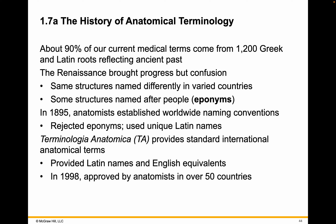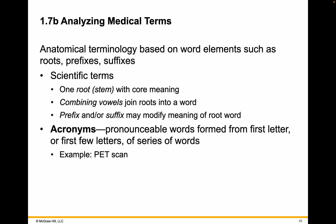The Terminologia Anatomica, or the TA, provides standard international anatomical terms — Latin names and English equivalents. In 1998, it was approved by anatomists in over 50 countries. That's why sometimes you'll hear me talk about a structure that, when I learned it many years ago, still used terms referring to the anatomist who first described it rather than its structure or function. Anatomical terminology is based on word elements like roots, prefixes, and suffixes. Scientific terms have one root with a core meaning, and combining vowels or joint roots with prefixes or suffixes may modify the meaning.